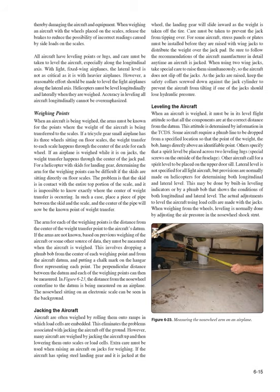Leveling the Aircraft: When an aircraft is weighed, it must be in its level flight attitude so all components are at the correct distance from the datum, as determined by the TCDS. Some aircraft require a plumb line dropped from a specified location; others specify a spirit level placed across two leveling lugs (special screws on the fuselage exterior). Lateral level is not specified for all light aircraft, but provisions are made for helicopters for both longitudinal and lateral level, possibly using built-in leveling indicators or a plumb bob. Leveling with load cells is done with the jacks; when weighing from the wheels, leveling is done by adjusting air pressure in the nose wheel shock strut.